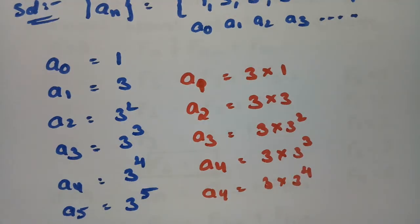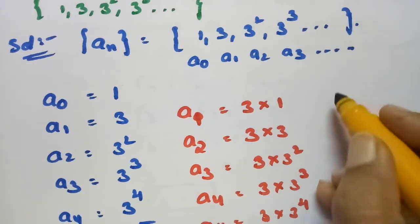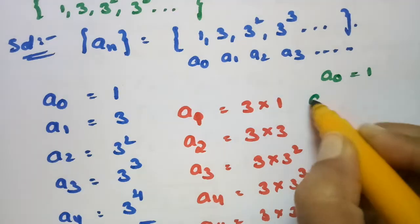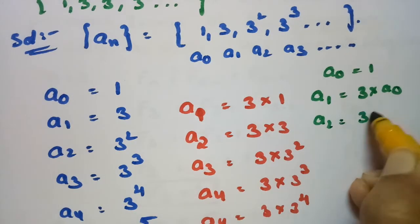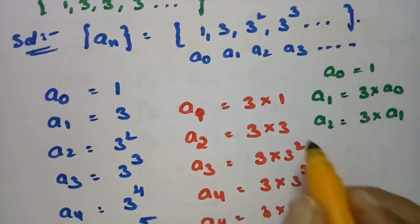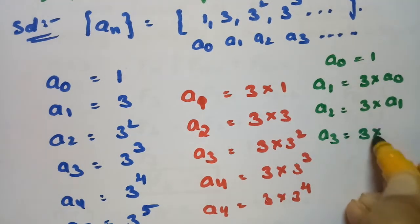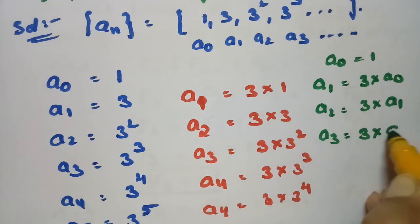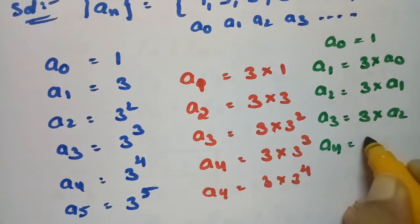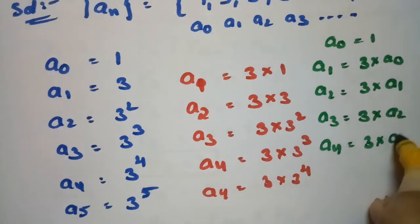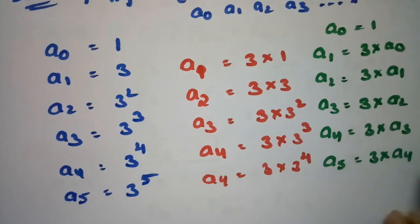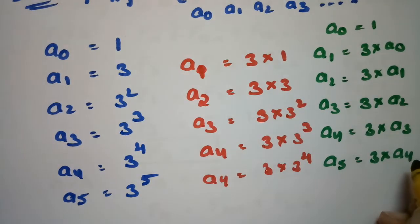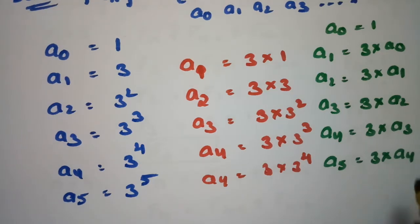Observing the pattern: A1 = 3 × A0, A2 = 3 × A1, A3 = 3 × A2, A4 = 3 × A3, A5 = 3 × A4. Each term is expressed as 3 times the previous term, so Aₙ = 3 × Aₙ₋₁. And so on — continuing this process gives the full sequence.